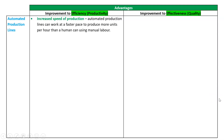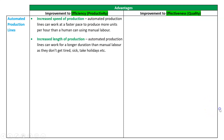With automated production lines, we can obviously work much faster. Automated production lines can work faster at a set pace per hour, much faster than a human can using manual labor.